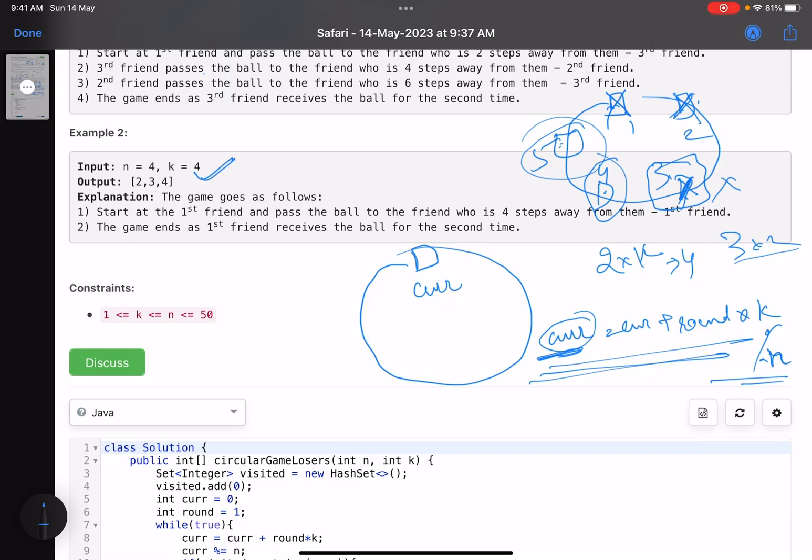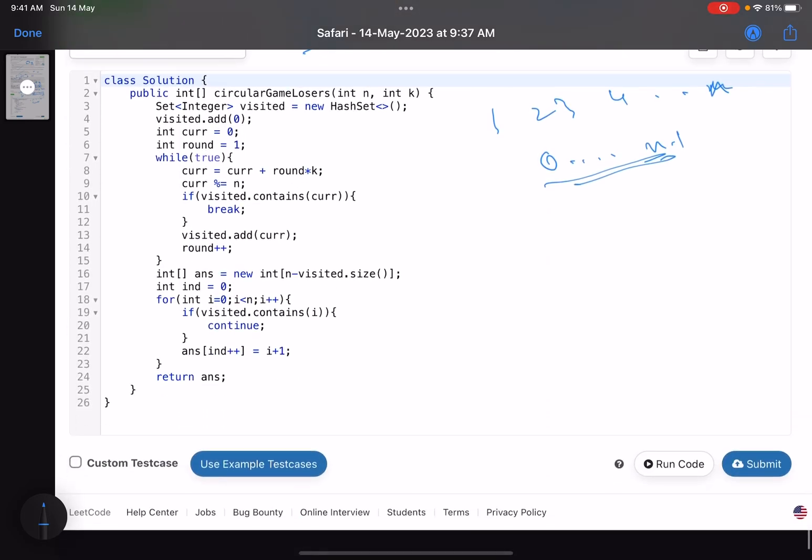Now a trick here is the values are starting from one, two, three, four till n, and we are taking mod here. So instead what we can do? We can assume values to be zero to n minus one. Why? Because when you take mod with n, what are the values you can get? You can get values from zero to n minus one. So we are transforming this for simplicity. If you take mod with n, you get a value zero as well, there is a possibility. But there is no player with value zero, so why not shift every value by one? That's what I have done here.